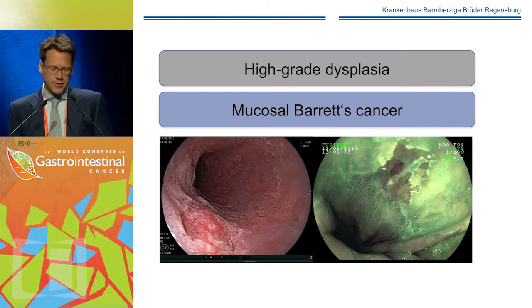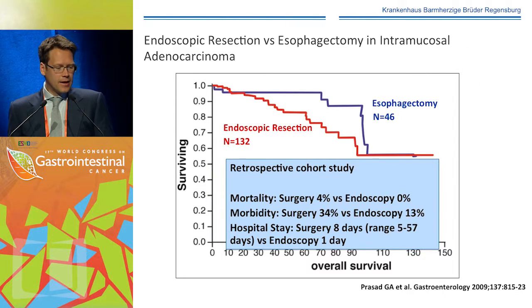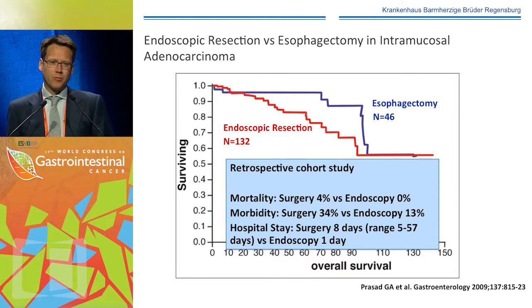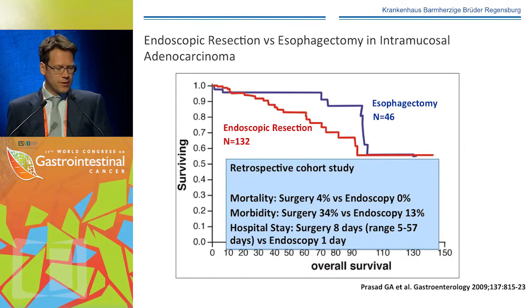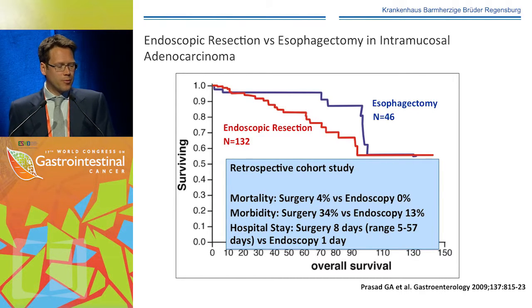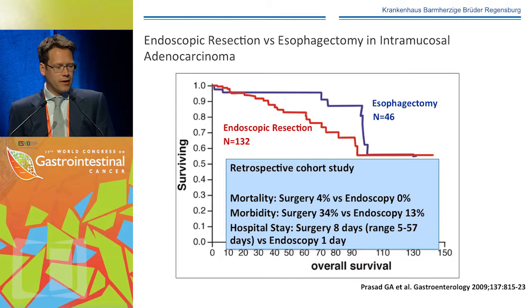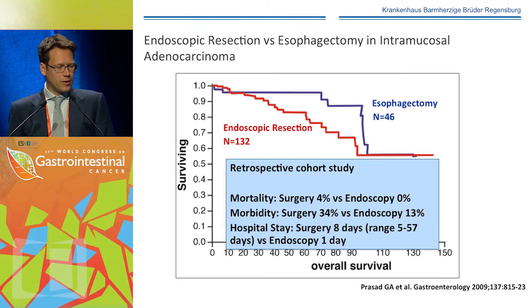Let's come to high-grade dysplasia and mucosal Barrett's cancer. Unfortunately, there is no prospective randomized trial comparing surgery with endoscopic treatment. Surgery was for many years the treatment of choice, but there are retrospective series. One from the Mayo group compared esophagectomy with endoscopic resection and found that mortality and morbidity were significantly higher in the surgery group, with a longer hospital stay, while long-term outcomes were similar in both groups.